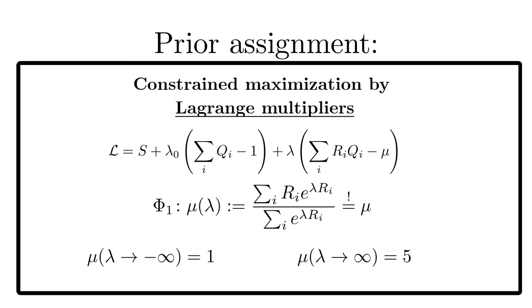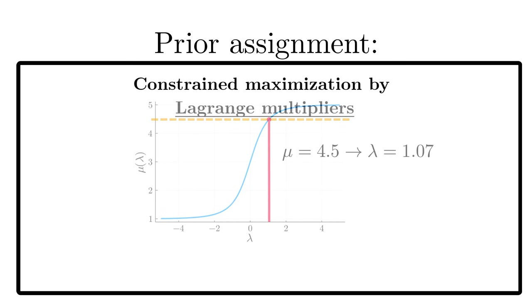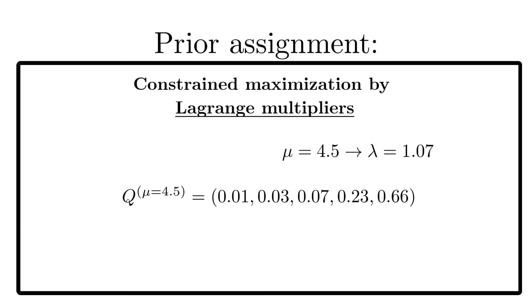In between, the function increases monotonically, as you can see in the figure. Since the curve increases monotonically, for each mean mu there exists a unique solution for the Lagrange parameter lambda, as illustrated in the figure, which shows the result for a mean value mu equal to 4.5. That leads to the following rating probabilities.